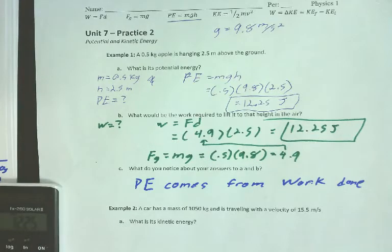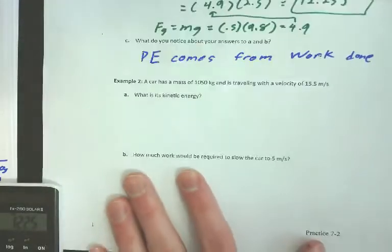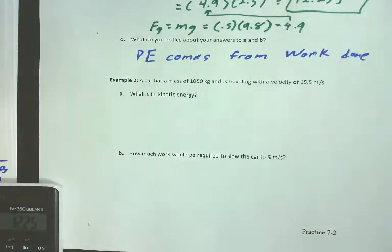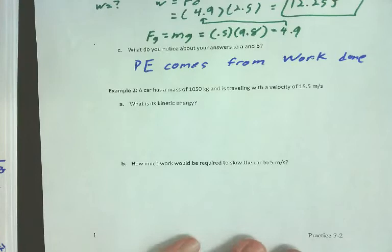That one's pretty straightforward. You've done all those maths before, so that one's not too surprising, hopefully. All right, example two. We have a car that has a mass of 1,050 kilograms. It's going with a velocity of 15.5 meters per second. What's its kinetic energy?